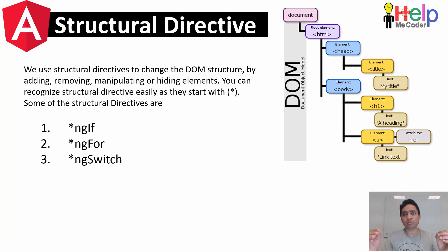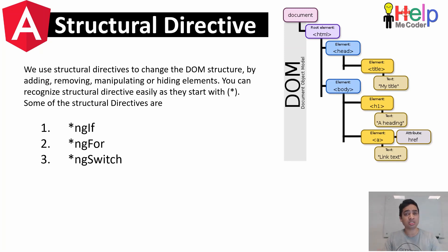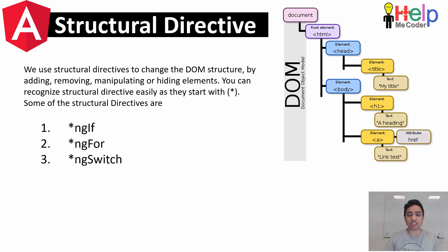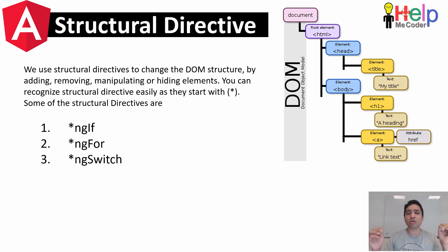If you remove a particular element from the DOM on the fly — for example, if you have a div and you suddenly remove it — you are manipulating the DOM. You're not hiding it by setting visibility to false, because the item is still inside the DOM. You're completely removing it. All structural directive commands have an asterisk sign — for example, NgIf, NgFor, NgSwitch.